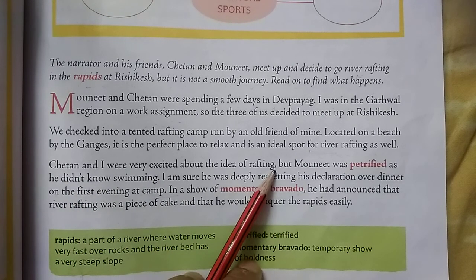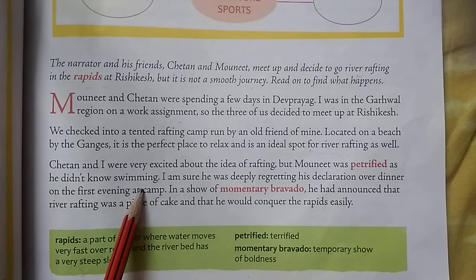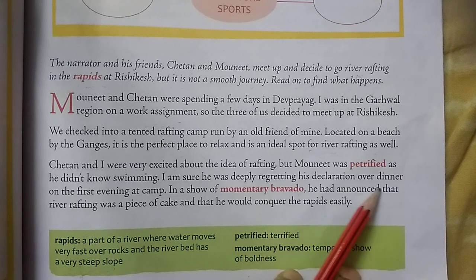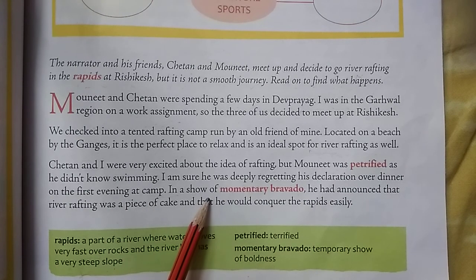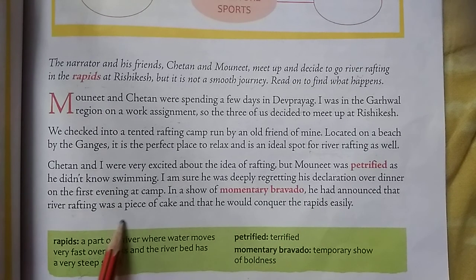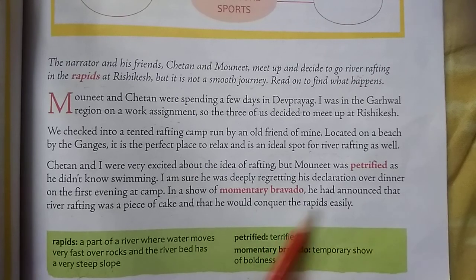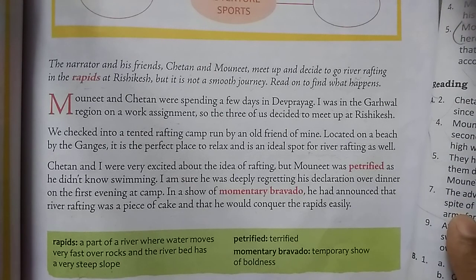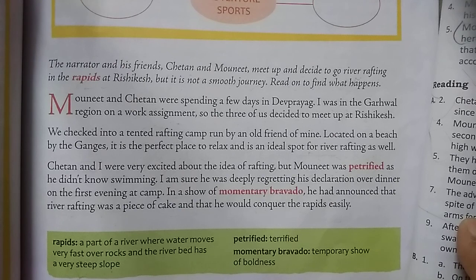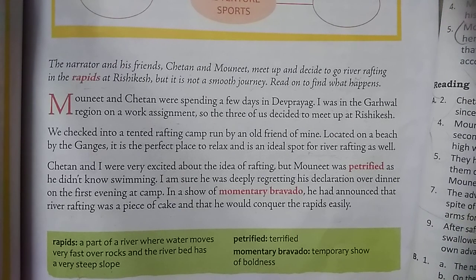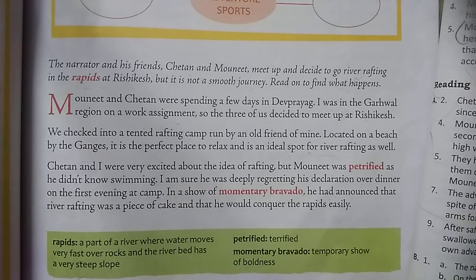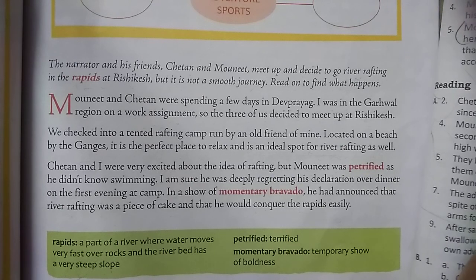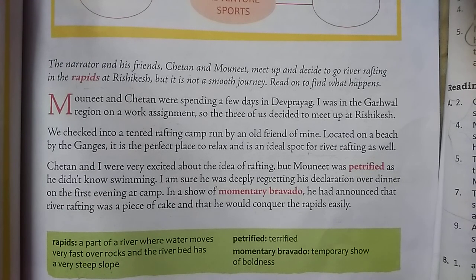Chetan and the narrator were very excited about the idea of rafting, but Maunit was terrified as he did not know swimming. The narrator is sure Maunit was deeply regretting his declaration over dinner on the first evening at camp, where in a show of momentary bravado he had announced that river rafting was 'a piece of cake' — meaning very easy work — and that he would conquer the rapids easily.